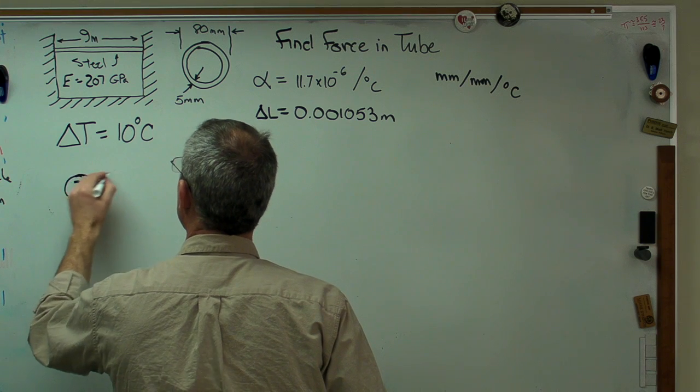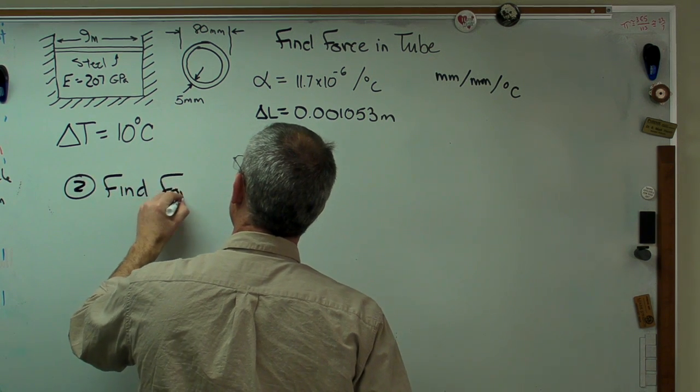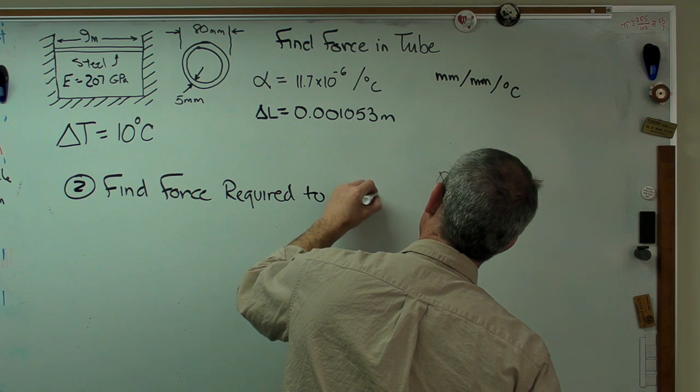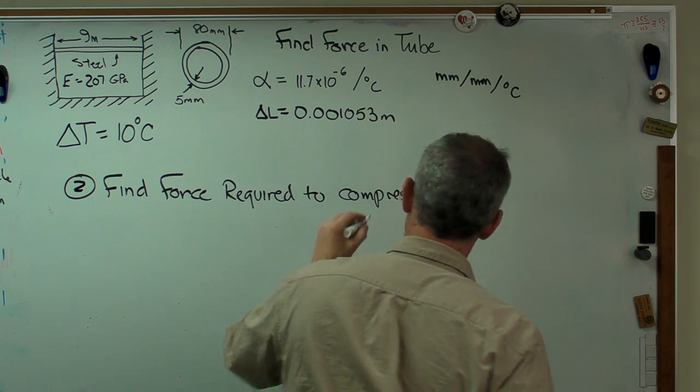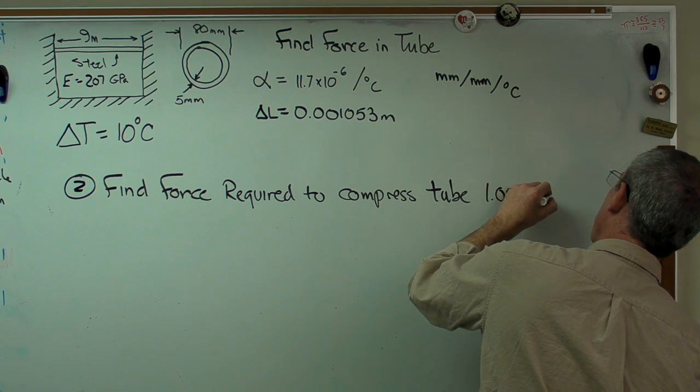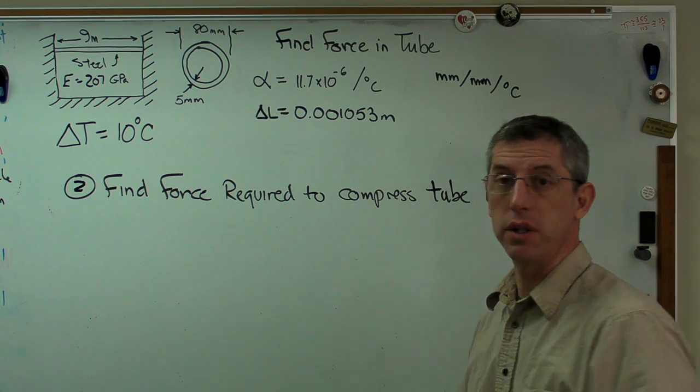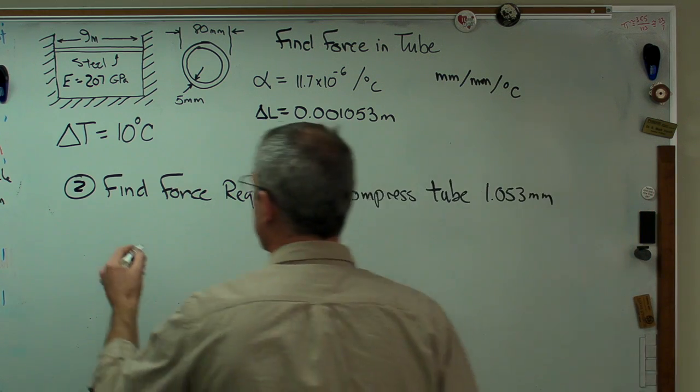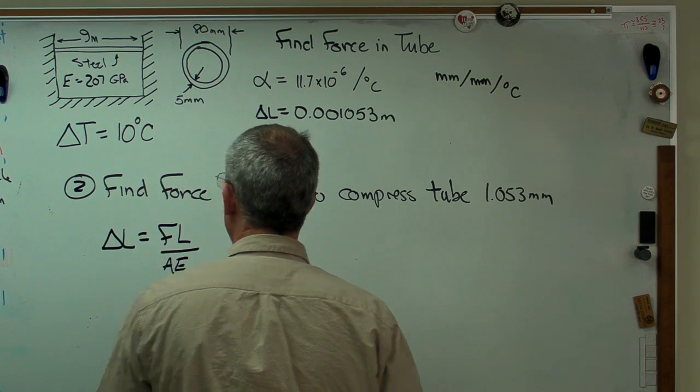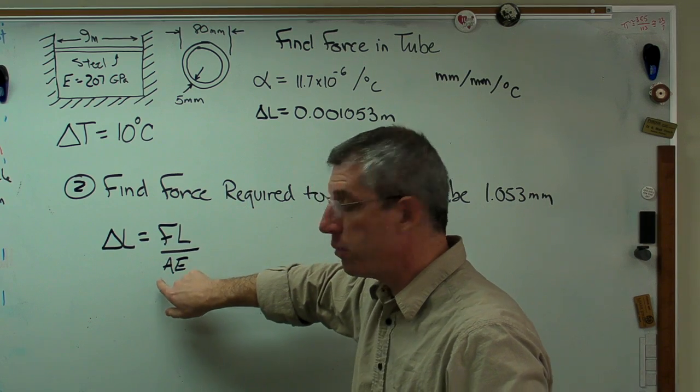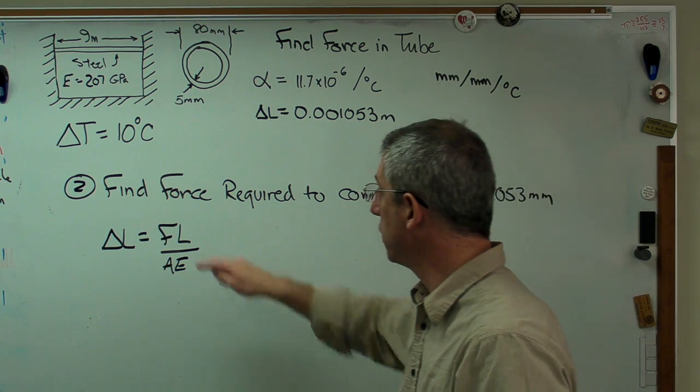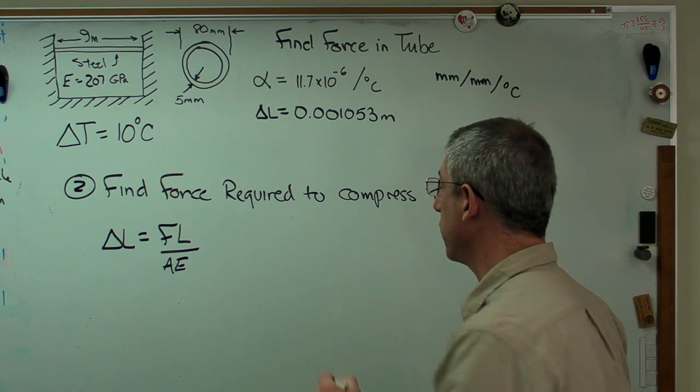So step 2. Find the force required to compress the tube 1.053 millimeters. We know how to do that too. That's an expression that we pick up at the beginning of most Strength of Materials classes. It's delta L equals F L over A E. Change in length equals force times length over cross-sectional area times the elastic modulus. The only thing we don't know right now in this expression is F, which we're trying to find out, and A, which we can calculate real quickly.